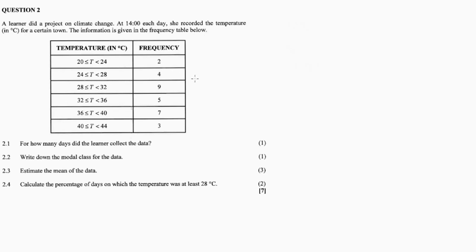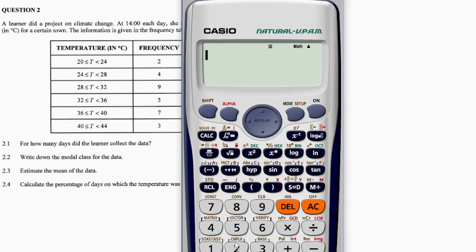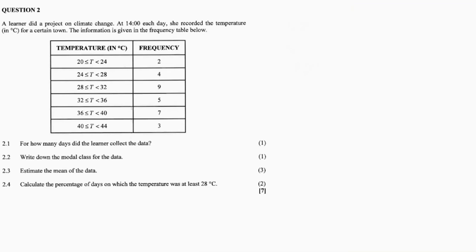Question 2.1 asks: for how many days did the learner collect the data? We add up all the frequencies — the total number of days. So we have 2 plus 4 plus 9 plus 5 plus 7 plus 7 plus 3, which is equal to 30 days. So for 2.1, the answer is 30 days.